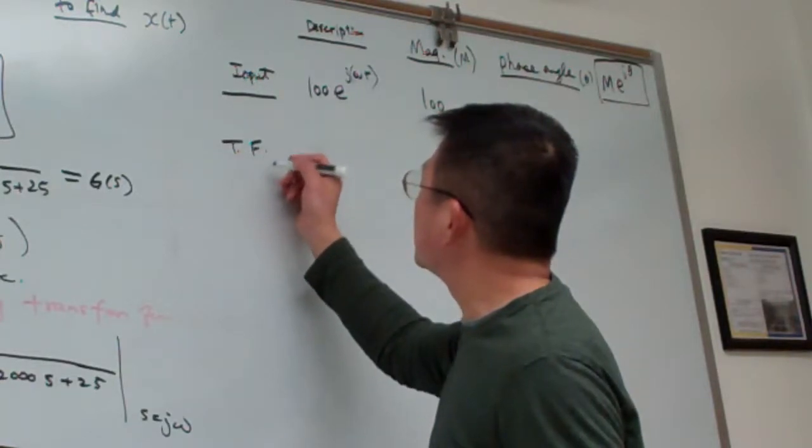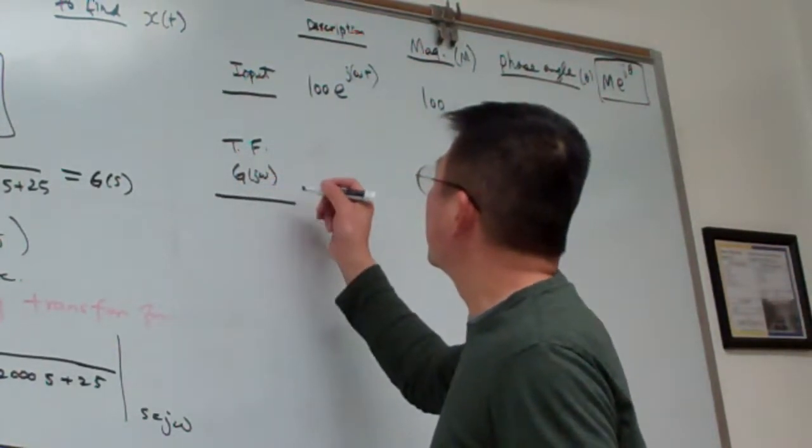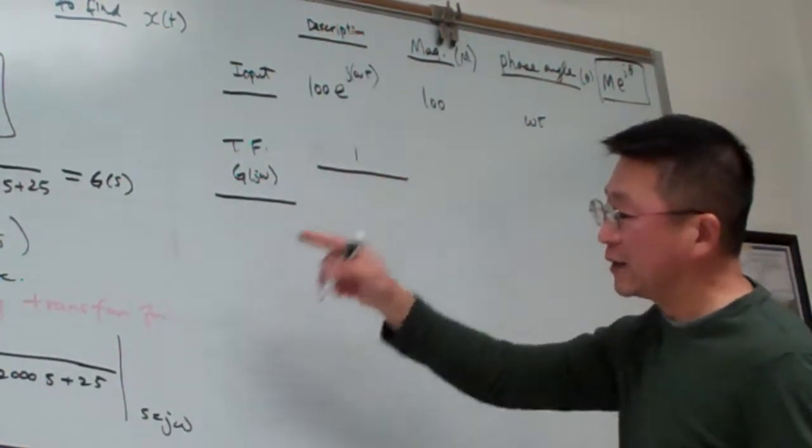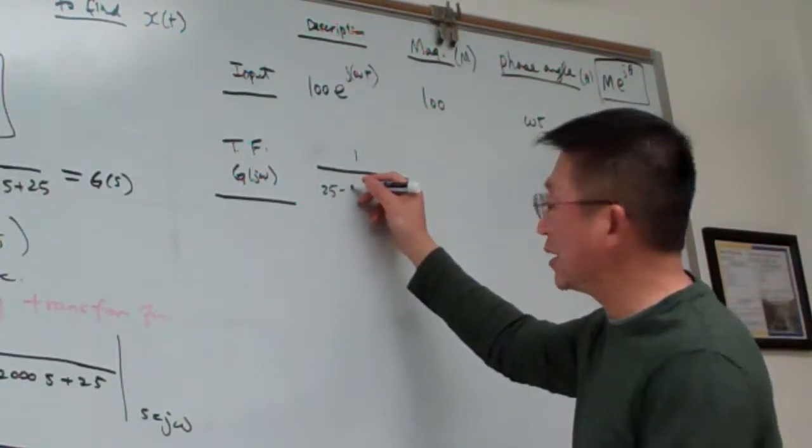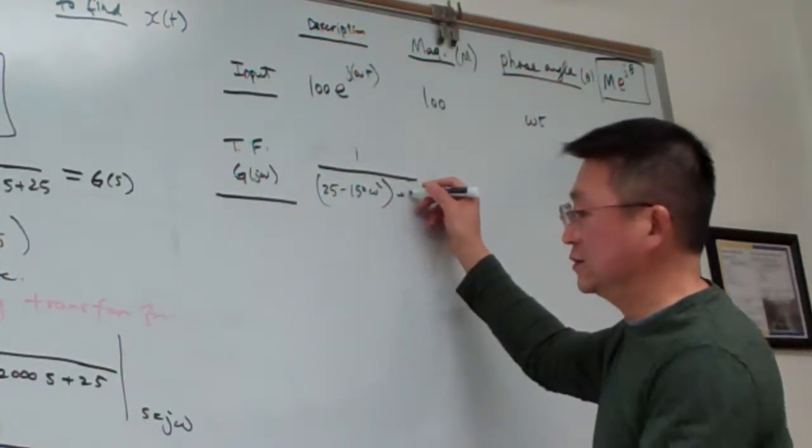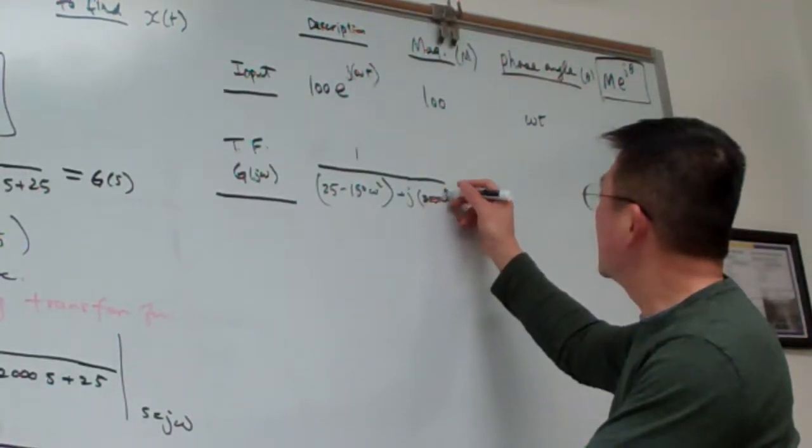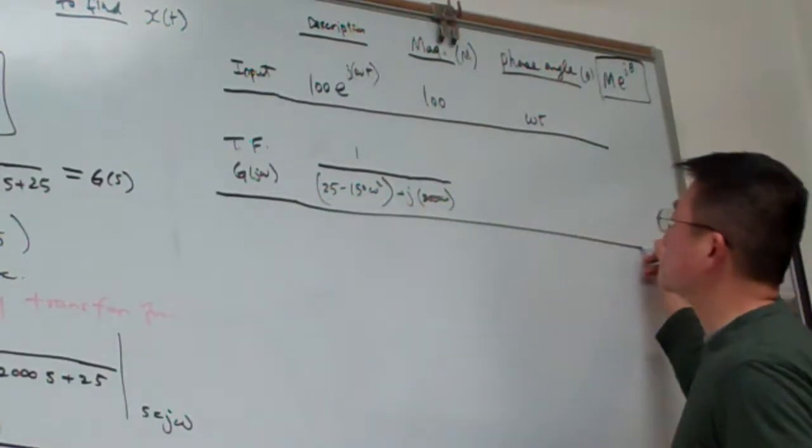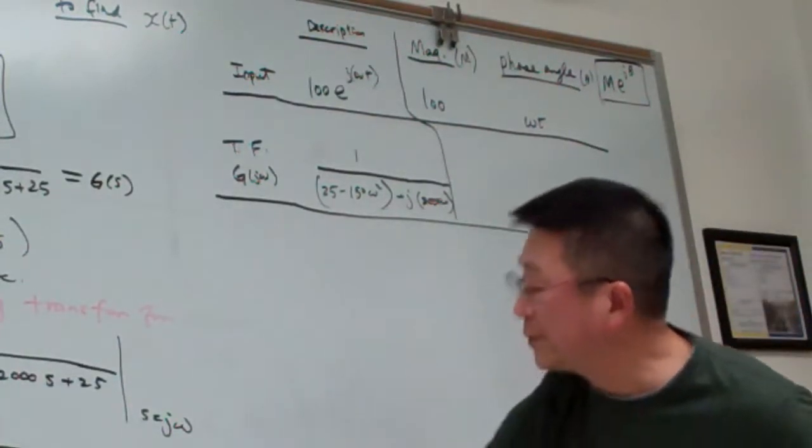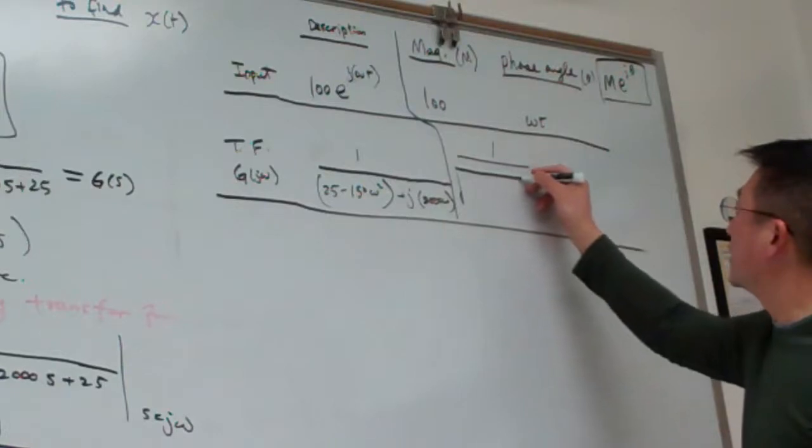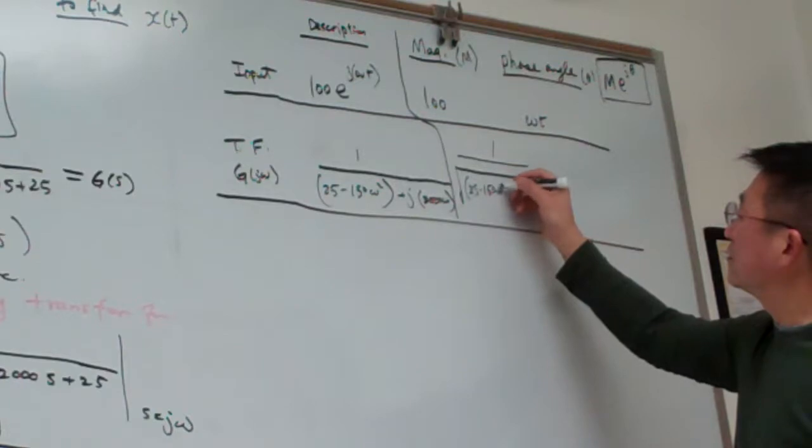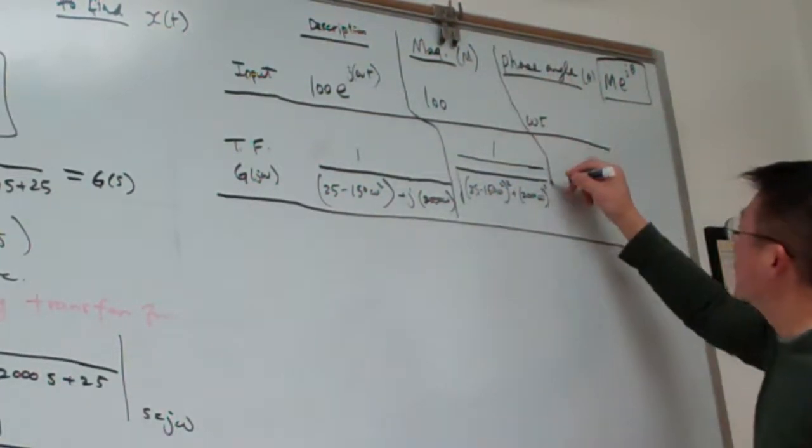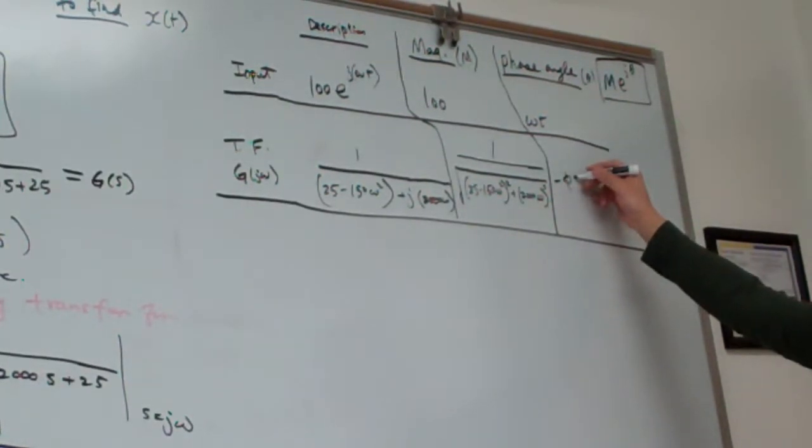So here the description is this. We have any complex representation m times e j theta. So m is our magnitude, and theta is our angle. So keep this in mind, that is our definition derived from the complex algebra. So this is the input. Then transfer functions, which means g j omega. So for transfer functions, we have this one. So the transfer function basically, if you like, you can write it out original like this. So this is 25 minus 150 omega square plus j 2000 omega. That is the original description here.